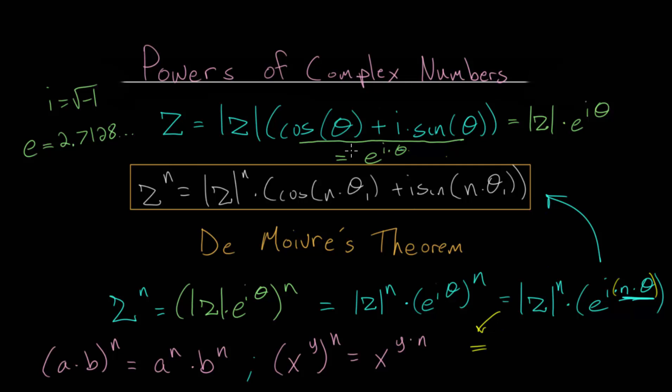And like I mentioned, we can essentially just rewrite it as this now, where we have the magnitude of our complex number raised to the nth power multiplied by the cosine of the angle, which is n times theta, plus i times the sine of the angle, which again is n times theta.